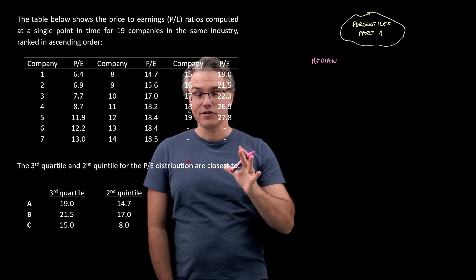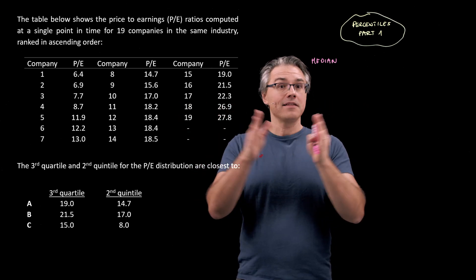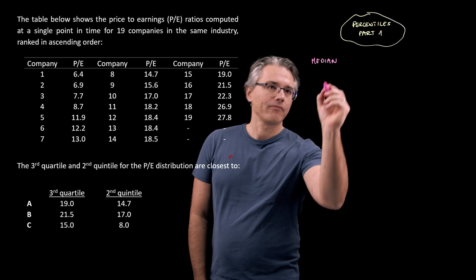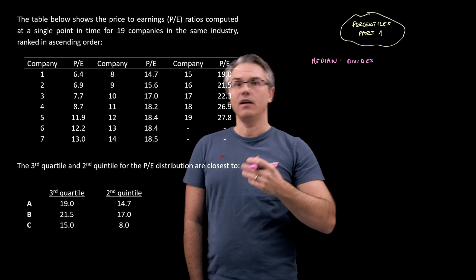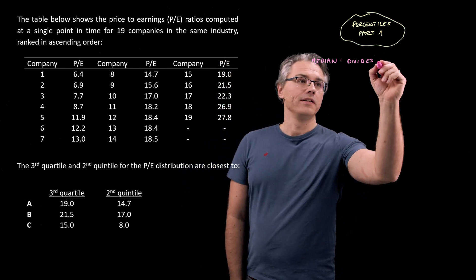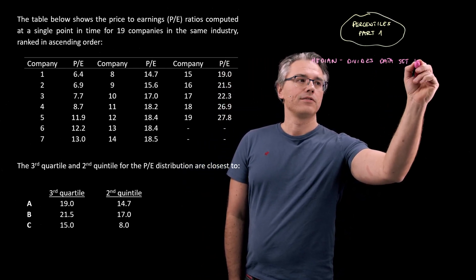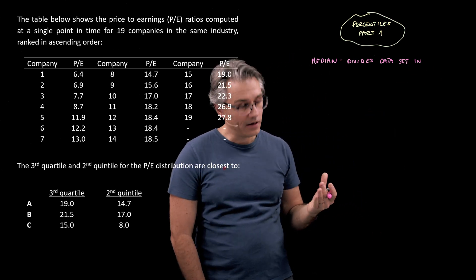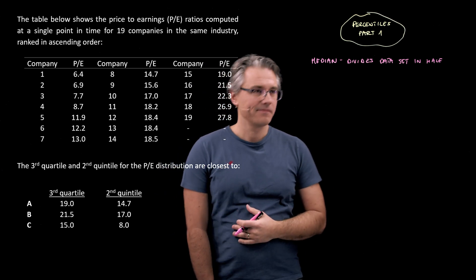We already know from previous questions what the median is. It's the observation which splits the whole data set into two equal halves. This one divides either the population or the data set in half.